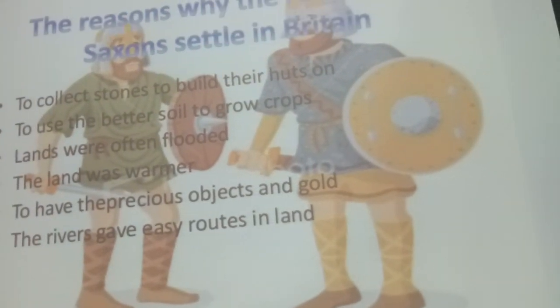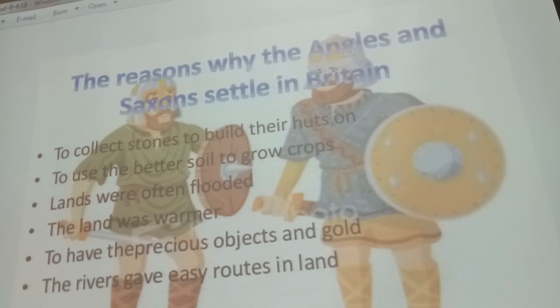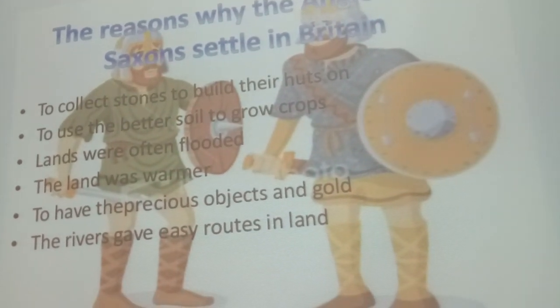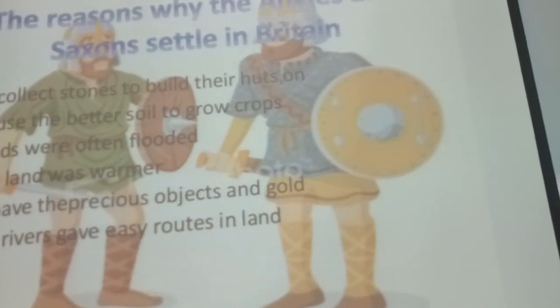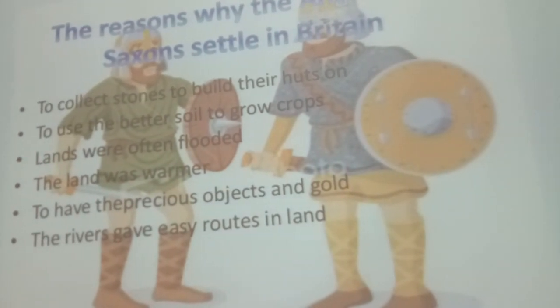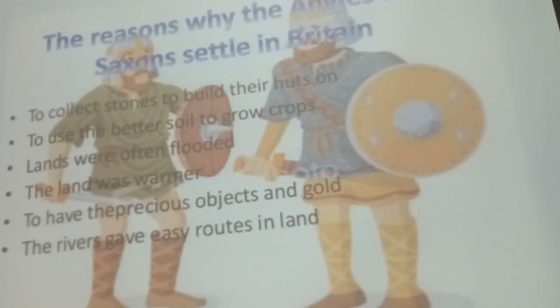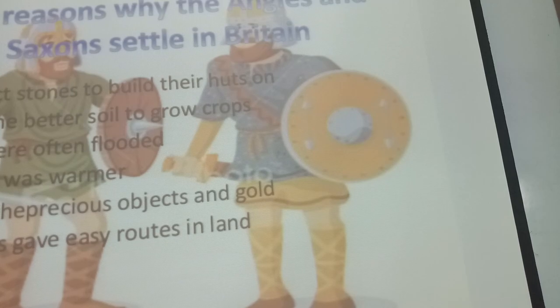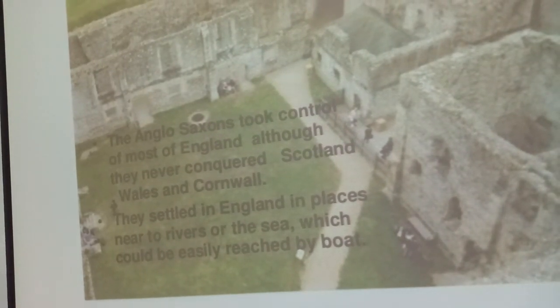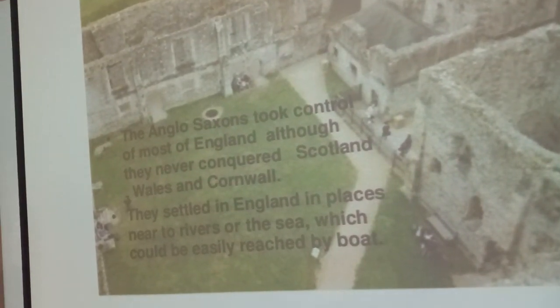The reasons why the Angles and Saxons settled in Britain: to collect stones to build their hearths, to use the better soil to grow crops since their lands were often flooded, the land was warmer, to have precious objects and gold, and the rivers gave easy routes inland. The Anglo-Saxons took control of most of England, although they never conquered Scotland, Wales, and Cornwall. They settled near rivers or the sea, which could easily be reached by boat.